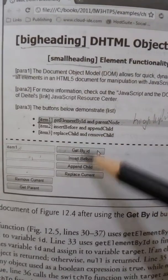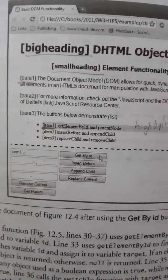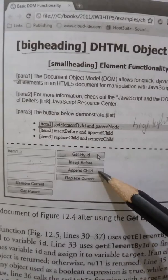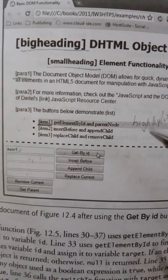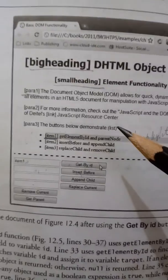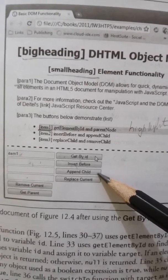I will click on the GetById button. You can click on the Append Child button. I am using the Append Child button. How to do that?